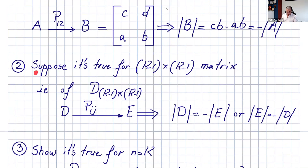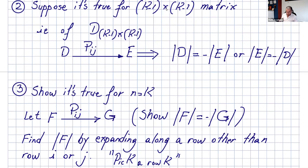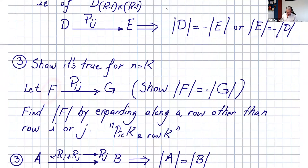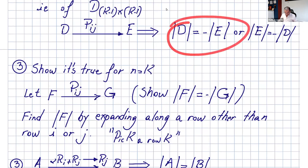Step two of the induction proof: suppose it's true for a (k-1) by (k-1) matrix — that is, permuting two rows changes the sign. Then in step three, using that assumption, you can show it's true for n equals k. Given a k by k matrix, if we permute two rows to get matrix G, we need to show det(A) equals negative det(G). To do that, find the determinant by expanding along a row other than row i and row j — just pick some row k. Try to write that out and use the induction hypothesis to get the result.